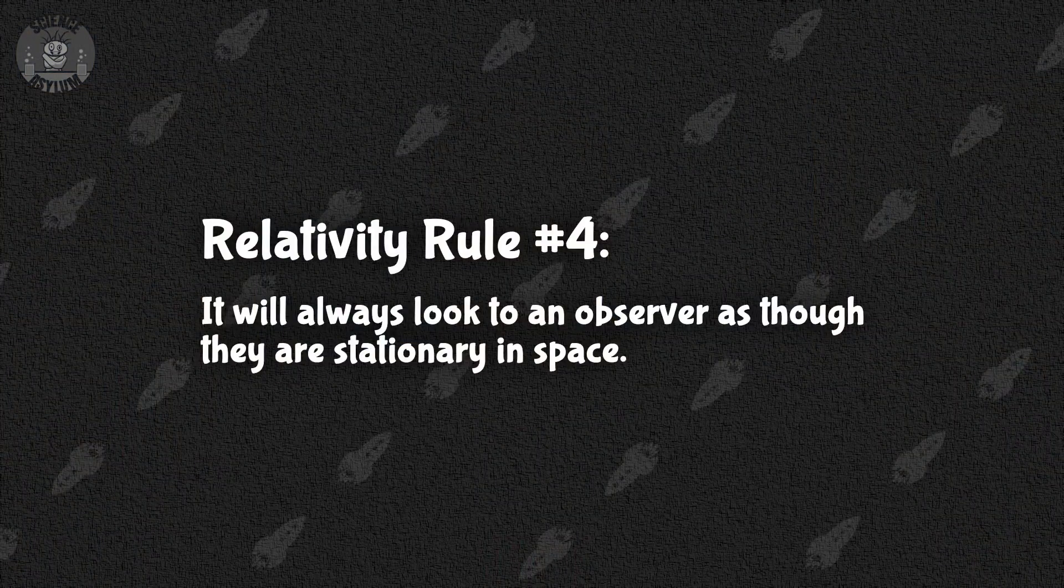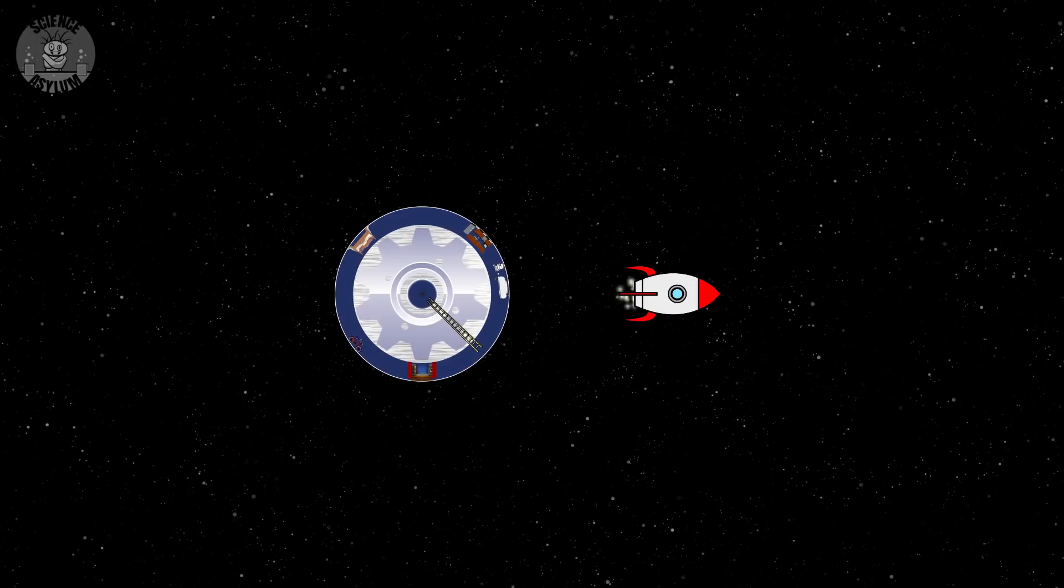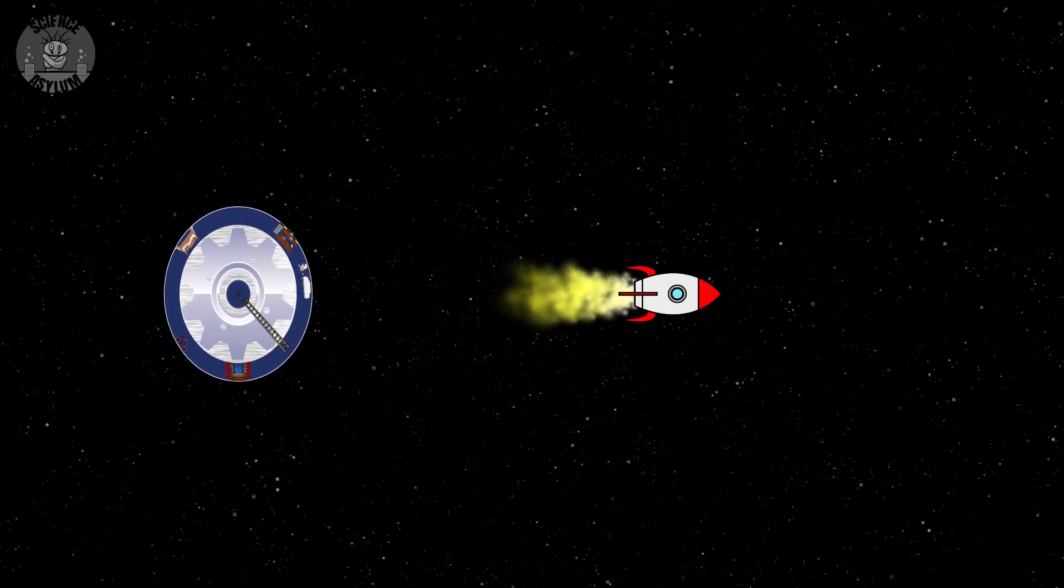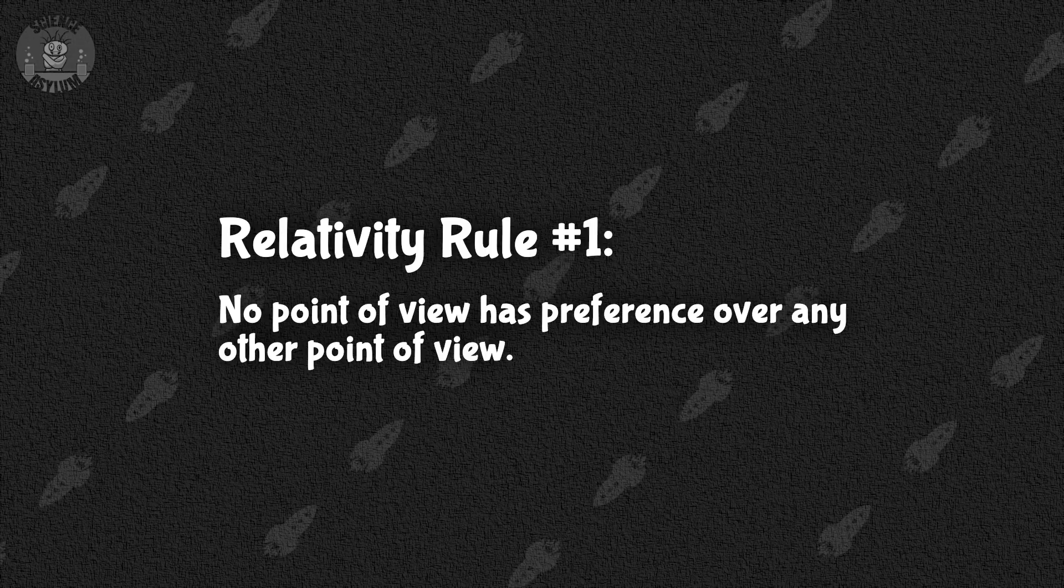Rocket Clone is the one that's surprised. Rule number four says, It will always look to an observer as though they are stationary in space. As far as Rocket Clone is concerned, he stayed in one place and I'm the one that moved. We also have rule number one. No point of view has preference over any other point of view.